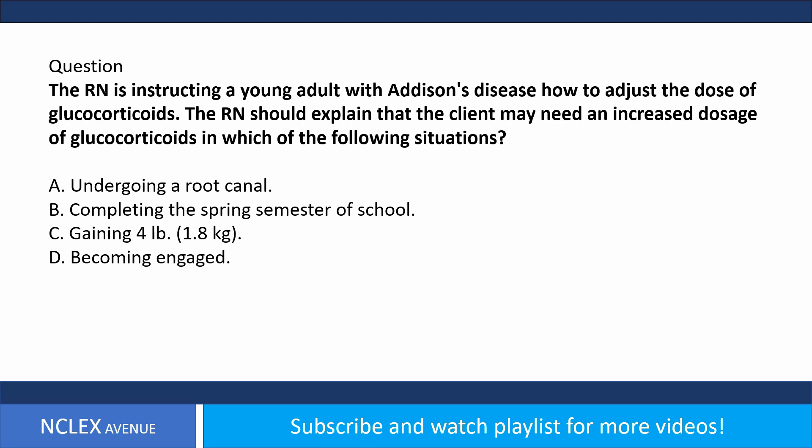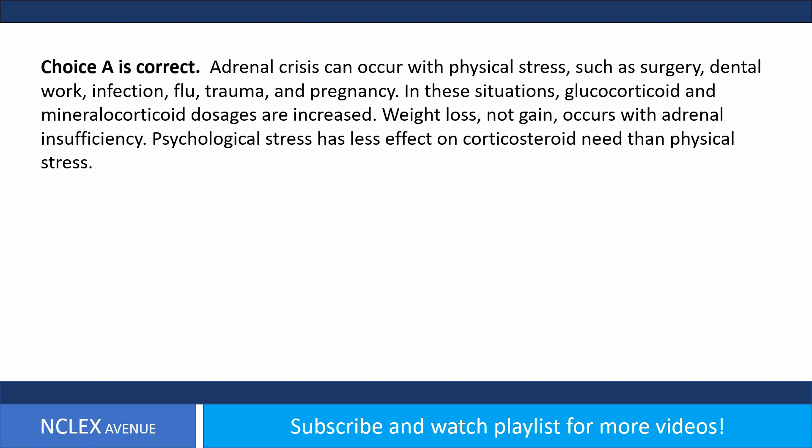Question: The RN is instructing a young adult with Addison's disease how to adjust the dose of glucocorticoids. The RN should explain that the client may need an increased dosage of glucocorticoids in which situation? A) Undergoing a root canal, B) completing the spring semester of school, C) gaining four pounds, D) becoming engaged. Answer choice A is correct.